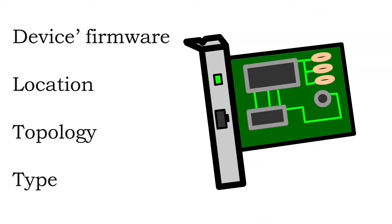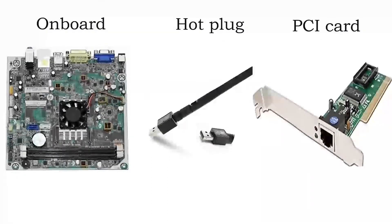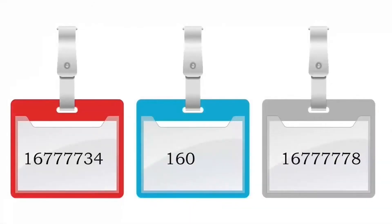In the generated name, the first two letters represent the device's firmware type. For example, Ethernet interfaces begin with EN, WLAN interfaces begin with WL, and WAN interfaces begin with WW. The next letter represents the device's type, location, or topology. For example, the letter O represents an onboard device, the letter S represents a hot plug slot, and the letter P represents a PCI card. The remaining numbers represent an index, ID, or port.